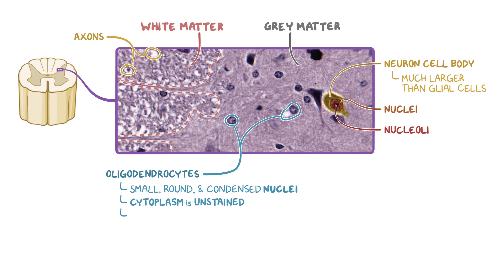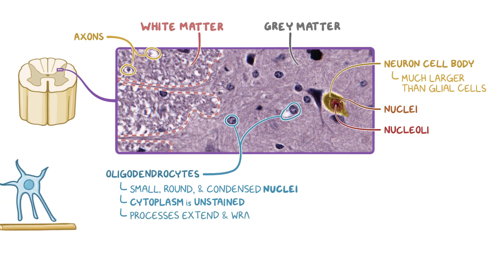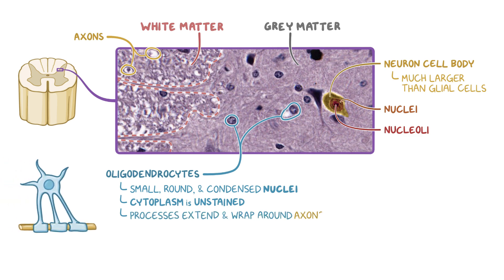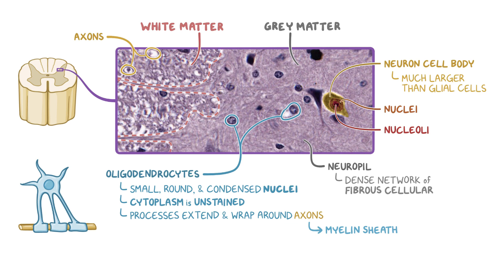Oligodendrocytes have many processes that extend and wrap around axons to form the myelin sheath for axons within the CNS. The peripheral nervous system's myelin sheaths are produced by Schwann cells instead. The gray matter surrounding all the cells is called the neuropil, which consists of a dense network of fibrous cellular branches or processes from glial cells and neurons.